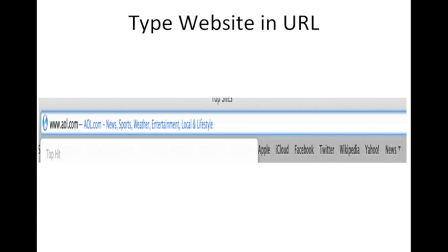In this tutorial, I'm going to show you how to forward an email. First, you must type the website where you receive your email, such as AOL Mail, Gmail, Yahoo Mail, or Outlook, into the URL.